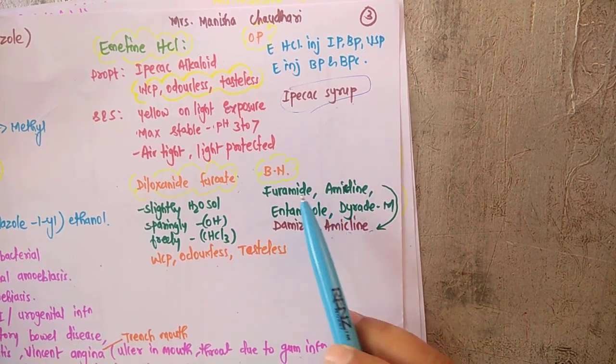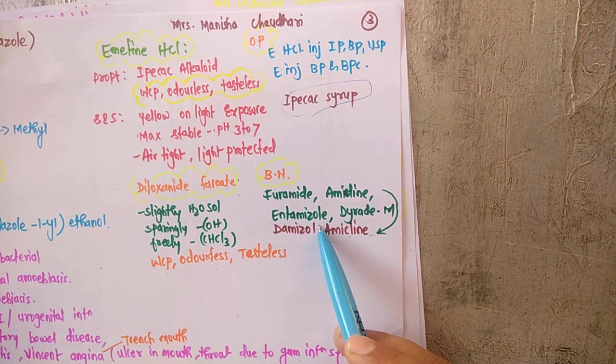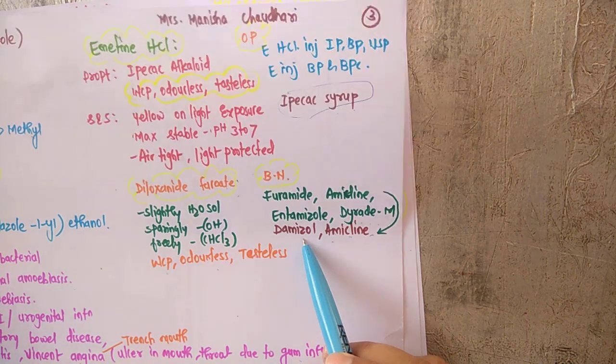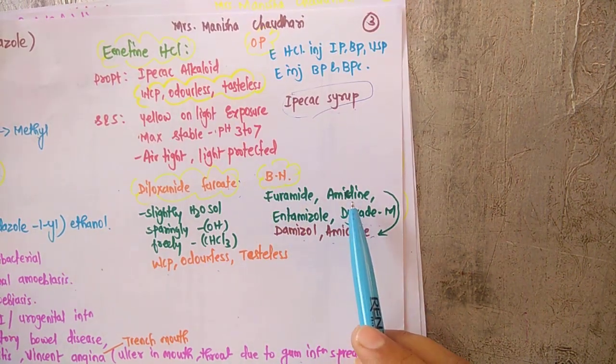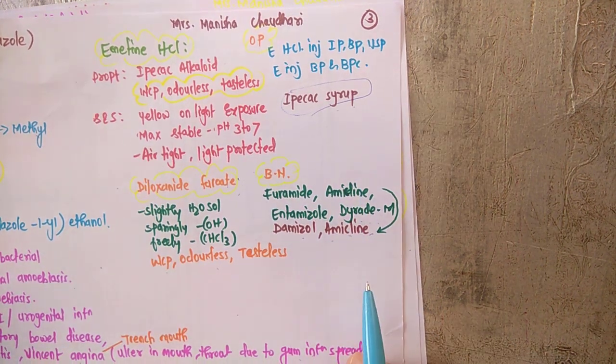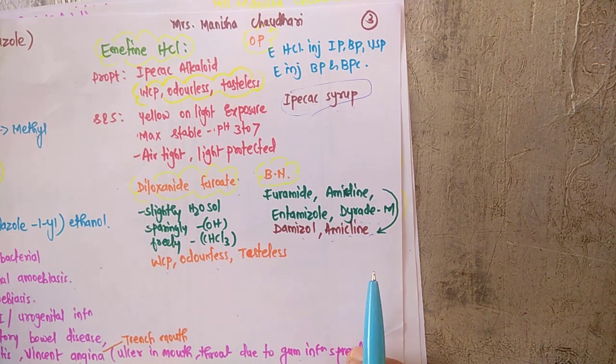The brand names of diloxanide furoate are Furamide, Amicline. This is not properly visible, so I have written it down: Amicline furoate, Entamizole, Dirade M, Damizol, etc. So these are the common brand name preparations which are available in the market. With this we finish with the anti-amebic drugs.